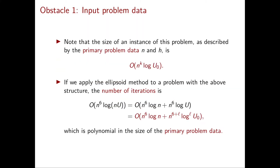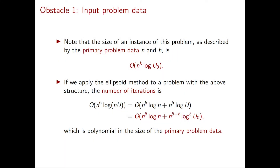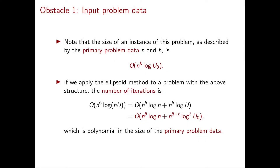The size of an instance of our problem, as described using the primary data n and the primary vector, is big-O of n to the k times log U_0. This is because the vector has big-O of n to the k entries, each at most U_0 in absolute value. Applying the ellipsoid method, the number of iterations is big-O of n to the 6 times log(nU). This is big-O of n to the 6 log n plus n to the 6 log U. Using our assumption that log U is big-O of n times (log U_0) to the L, we get that this is polynomial in the size of the primary problem data.